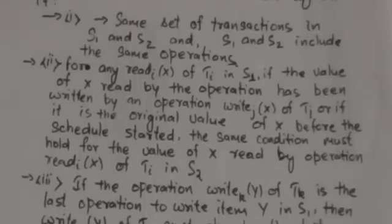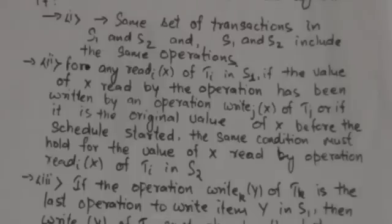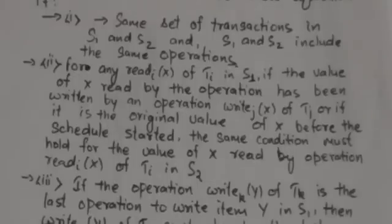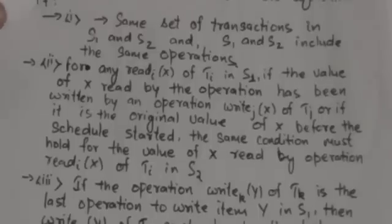The second condition is: for any read(X) operation of transaction Ti in schedule S1, if the value of X read by that operation has been written by an operation write(X) of transaction Tj — or if it is the original value of X before the schedule started — the same condition must hold for the value of X read by read(X) of transaction Ti in schedule S2.